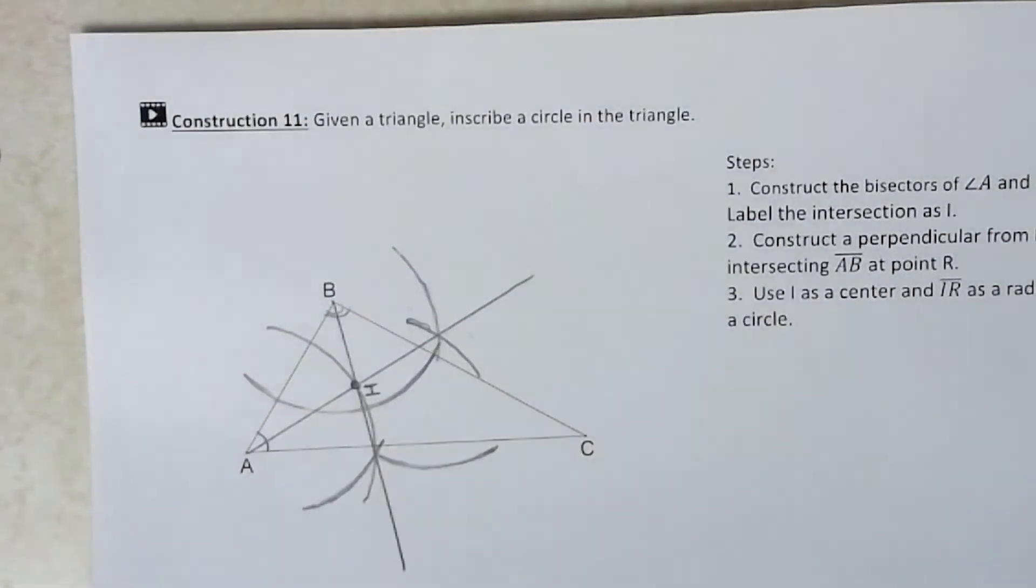Now the in-center of a triangle is equidistant from the three sides, so I is the same distance away from AB, AC, and BC.